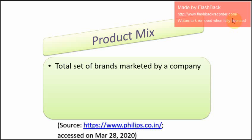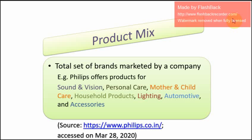Product mix is the total set of brands that are marketed by a company. For example, Philips offers products for sound and vision, personal care, mother and child care, household products, lighting, automotive, and accessories. As you can see, there are different types of products that Philips offers — these products may or may not be similar to each other.